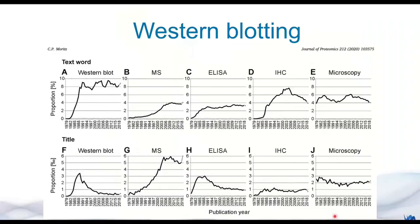The year 2020 marked the 40th anniversary of western blotting. This figure, taken from a Journal of Proteomics publication from 2020, shows the proportion of five different techniques in all protein-related publications, estimated by PubMed mentions in text and title. Although the percentage of western blot mentioned in titles has been decreasing over the years, it is consistently higher in proportion compared to other techniques — demonstrating that western blot is an essential and widely used analytical technique in protein studies.